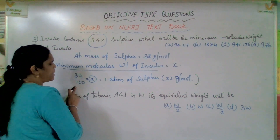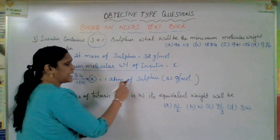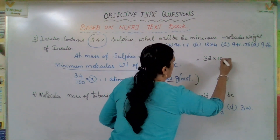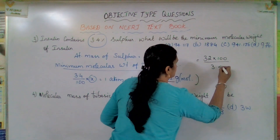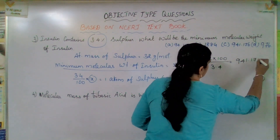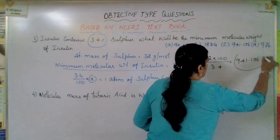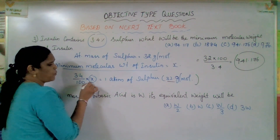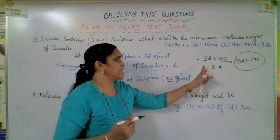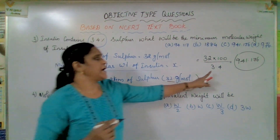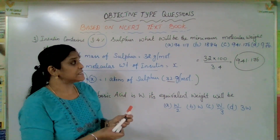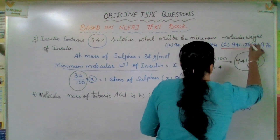So 3.4 divided by 100 into X is equal to one atom of sulphur — that is 32 gram. Therefore X equals 32 into 100 divided by 3.4, which gives approximately 941.176. So the minimum molecular weight of insulin is 941.176. Option C is the correct answer. I hope you got a clear idea.